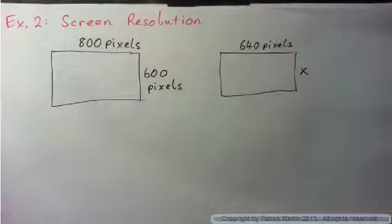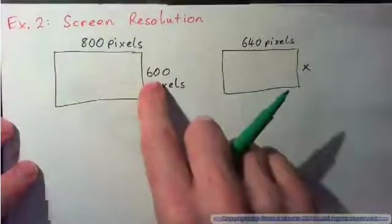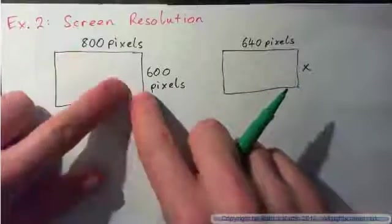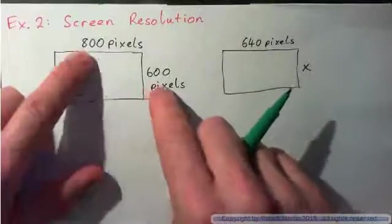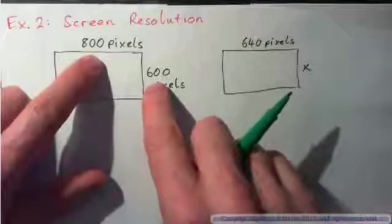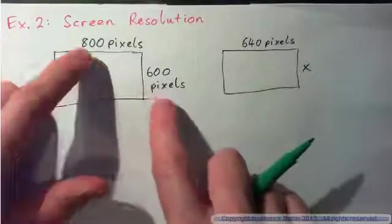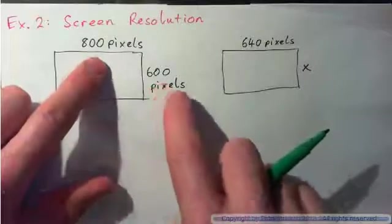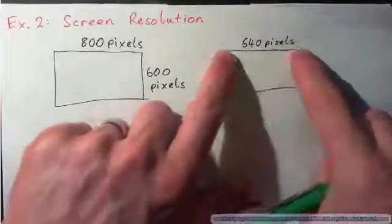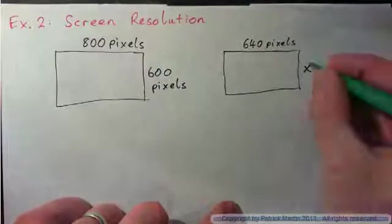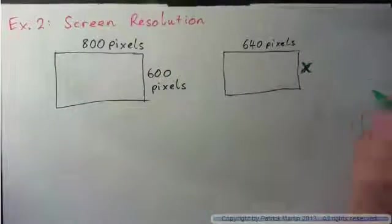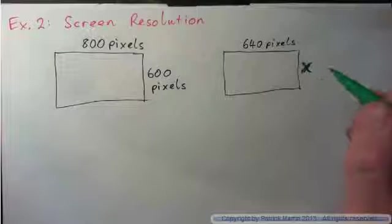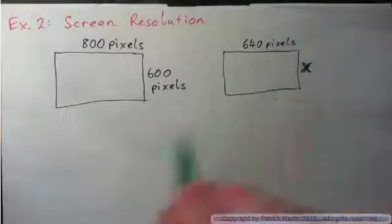Let us look at example 2, screen resolution. Sometimes, videos that I make don't play very well, and so I make them smaller. So, the best resolution that I would have... the best resolution for the videos, these videos I make is 800 times 600. But sometimes to make them play better on people's computers, if you have slow internet, and that I make them to be 640 times what? So times an unknown amount. So, please press pause and figure out what the size of this smaller video is.